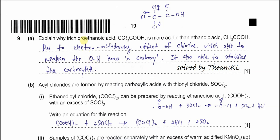Question 9a: explain why trichloroethanoic acid is more acidic than ethanoic acid. The carbon next to the carboxyl group has three chlorine atoms, and these three chlorines are electron-withdrawing — they pull electrons toward themselves. The electrons come from the O-H bond on the carboxyl group, so with the presence of these electronegative atoms, the O-H bond becomes weakened and easier to break due to the electron-withdrawing effect of the chlorine.